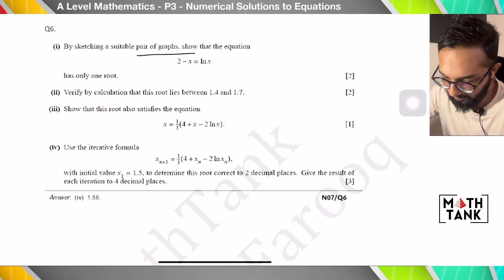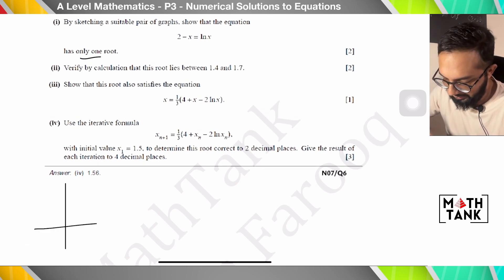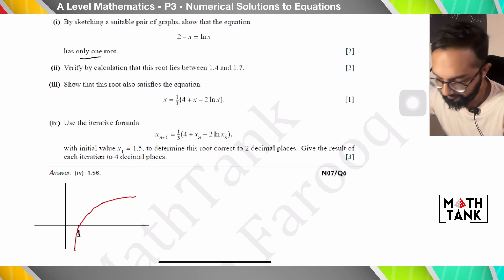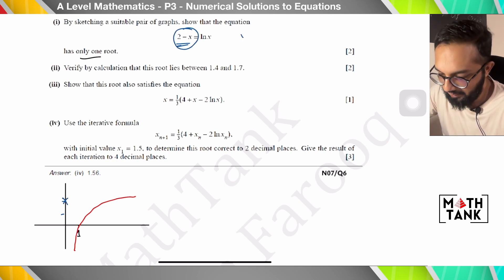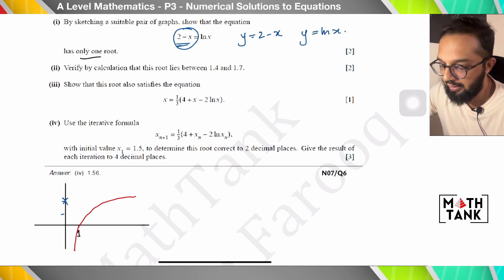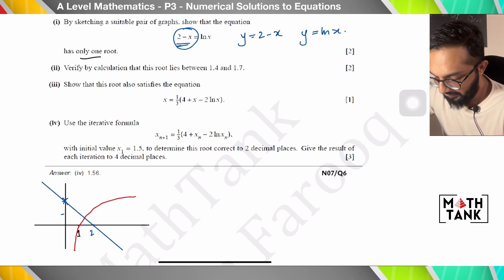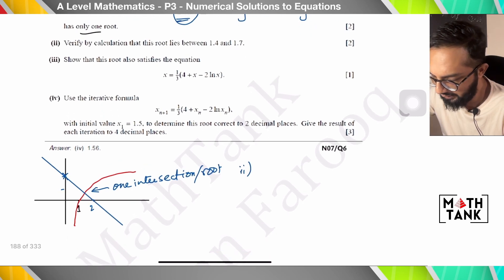Question 6: sketch a suitable pair of graphs to show the equation has only one root. The graph of ln x starts at x = 1 and increases. The graph of 2 − x is a straight line starting at y = 2 on the y-axis and crossing the x-axis at x = 2. The graphs show one intersection point, confirming one root.